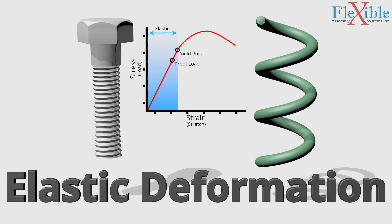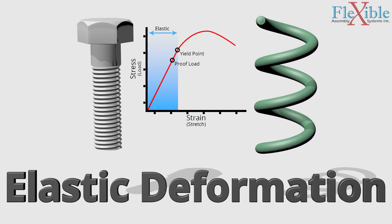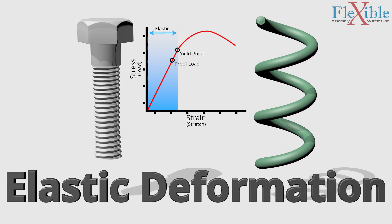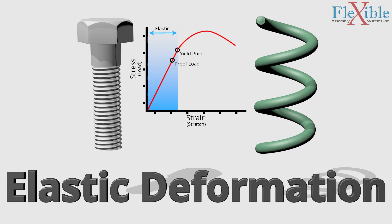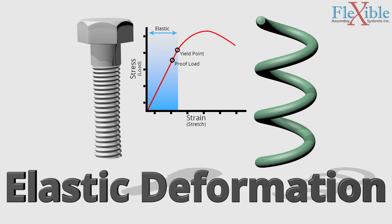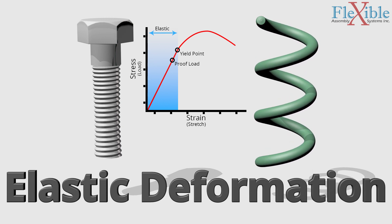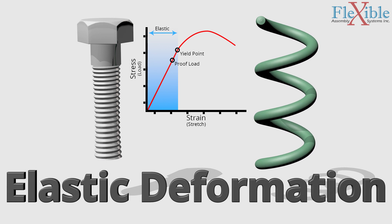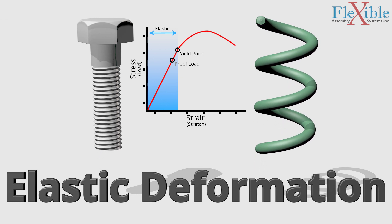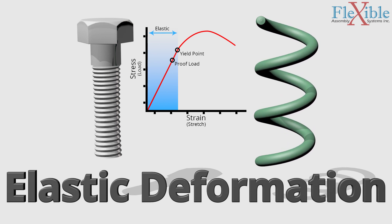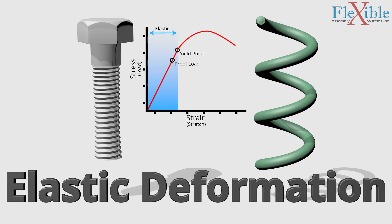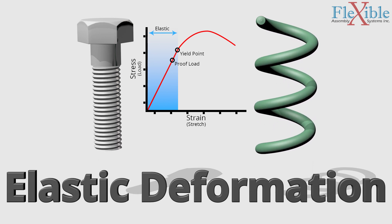All fasteners have a proof load assigned to them which is typically around 90% of the yield point. It's recommended that your clamp load is 75% of the proof load of your fastener. This way you can safely use a fastener without it permanently deforming.